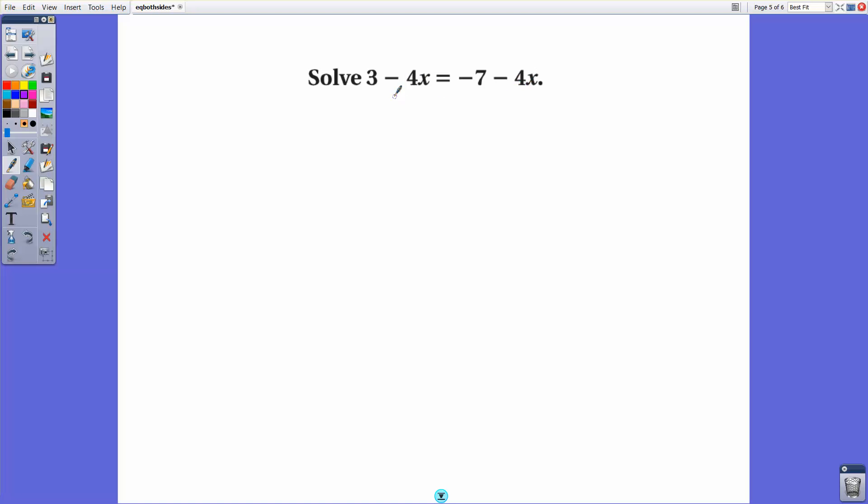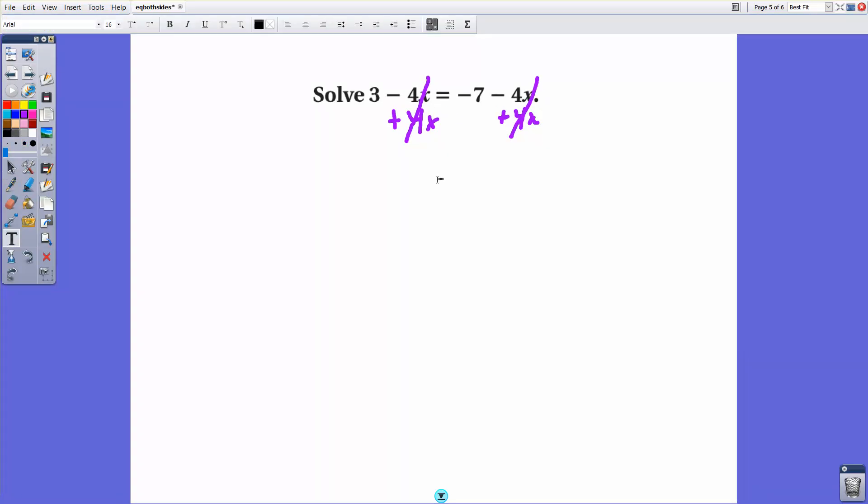And they're on both sides of an equal sign. So you'll notice that doing the opposite by adding 4x to both sides, you'll actually cancel both of those terms away. So what happens here? You're left with a statement. 3 equals negative 7. Does 3 equal negative 7? No.